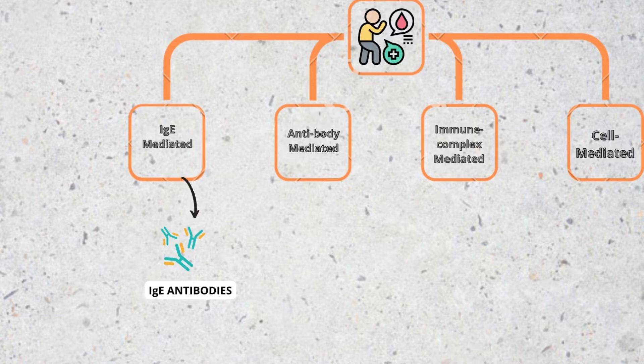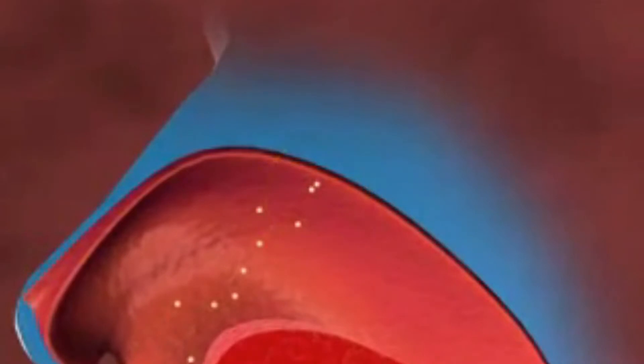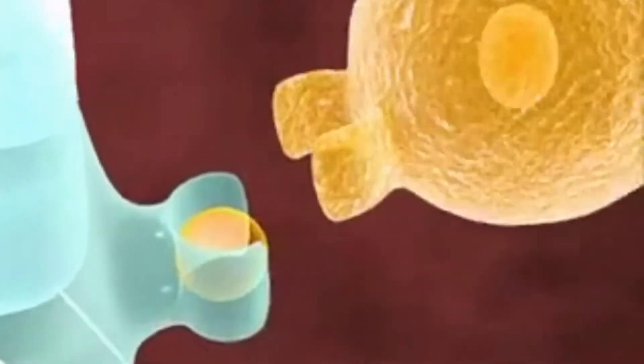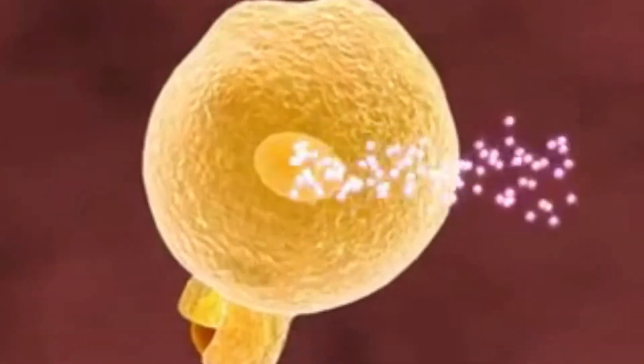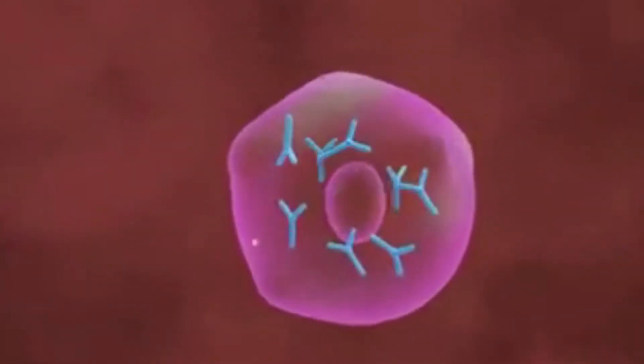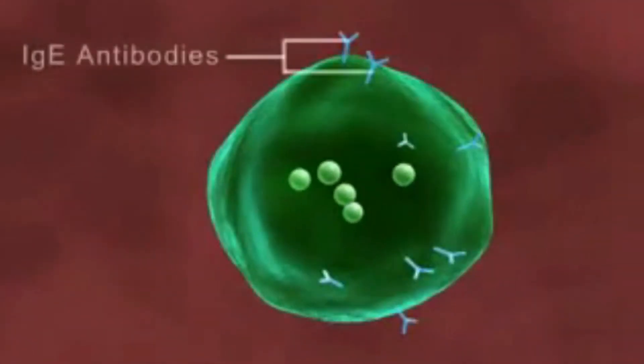The fourth type is considered a delayed hypersensitivity reaction because it usually occurs more than 12 hours after exposure to the allergen. Type 1 reactions are mediated by proteins called IgE antibodies produced by the immune system. On first exposure, the inhaled allergen enters the mucous membranes lining the nasal passages, where it is taken up by the antigen-presenting cell, which presents it to the T-cells. These T-cells activate the B-cells to release IgE antibodies against the allergen, which then sit on the surface of the mast cells.